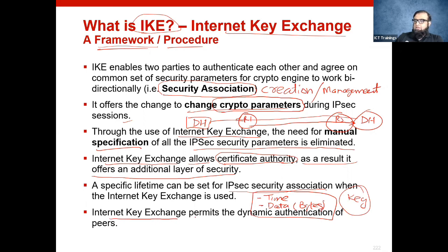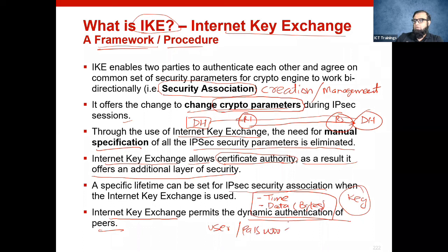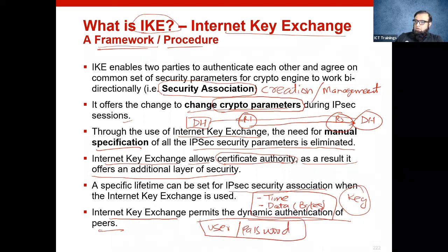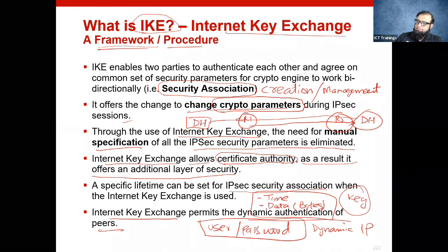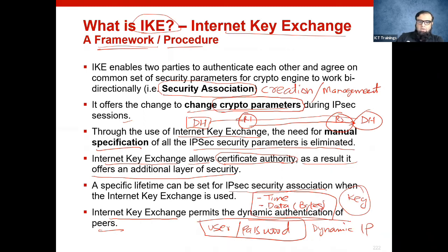Internet Key Exchange also permits dynamic authentication of peers, meaning username and password-based authentication. This supports remote access VPN, where the peer's IP address may also be dynamic — IKE handles that as well. These are the main purposes of the Internet Key Exchange framework.